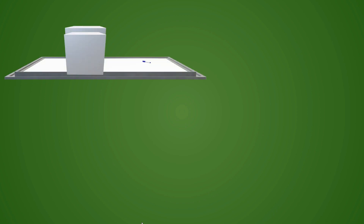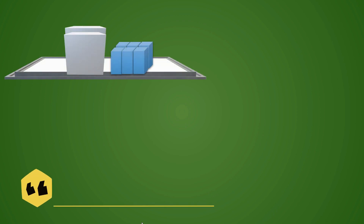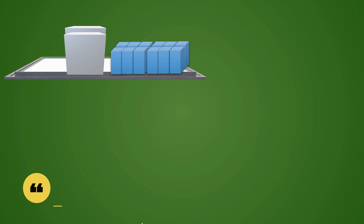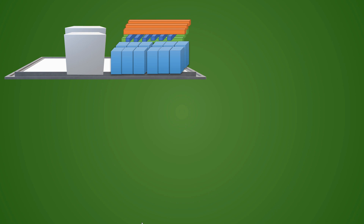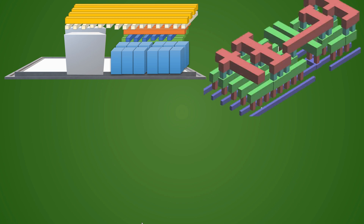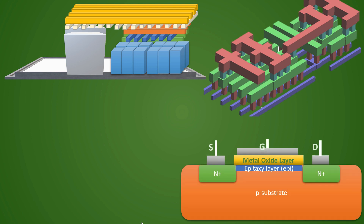We have seen in a previous video how a routing stack is created. The blue ones are standard cells, the white ones are macros, and this is the routing stack we have already seen. We have also seen the 3D view and understood the concept and importance of routing in sub-nanometer technology. Now in this video, we have to understand some basic routing concepts.